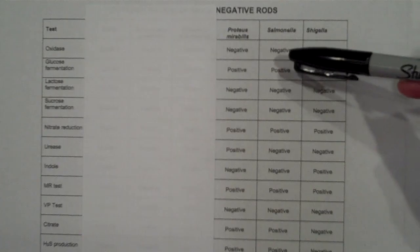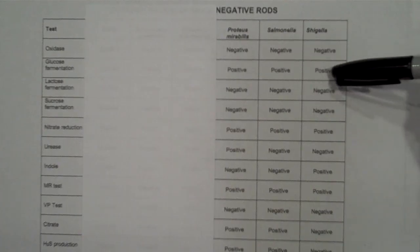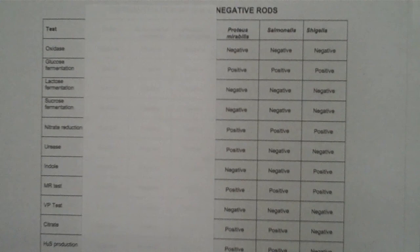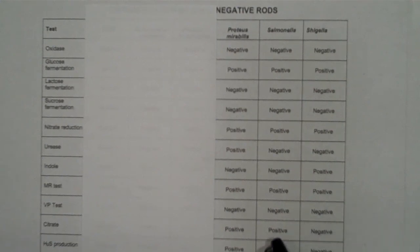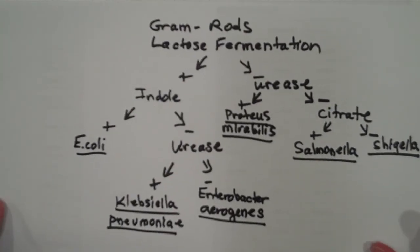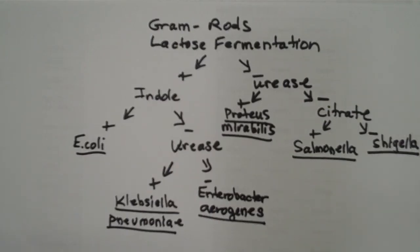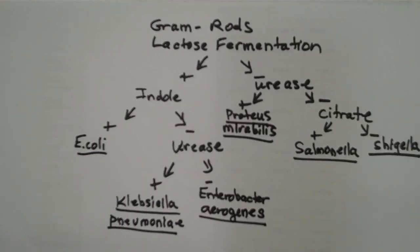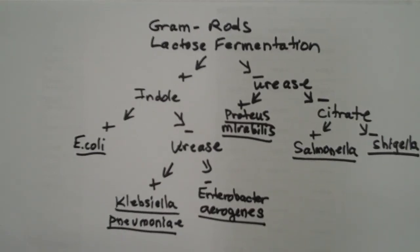Now we just need to separate Salmonella from Shigella by looking at our biochemical test results. An option here would be citrate, and that's the test I'm going to use. I added citrate to the dichotomous key — Salmonella was positive, Shigella was negative — and my dichotomous key is complete. That's how you do a dichotomous key for bacteria using biochemical test results.